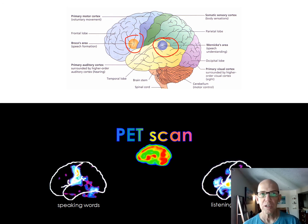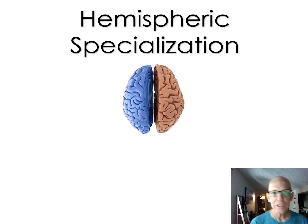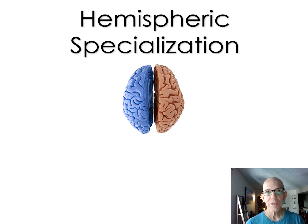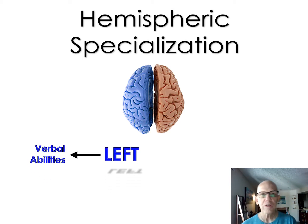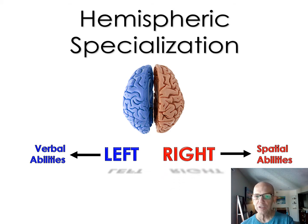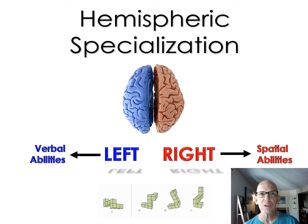This concept is called hemispheric specialization. If I split the brain down the middle, the two halves don't do the same thing — they're specialized. We started finding out early on that the left half handles verbal abilities, and the right is more about spatial ability — like understanding maps and navigating environments in your head.